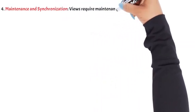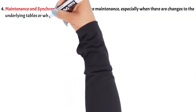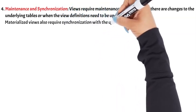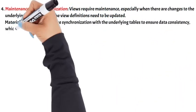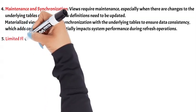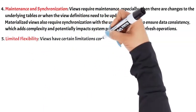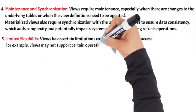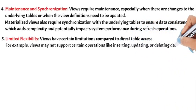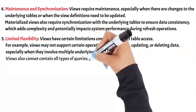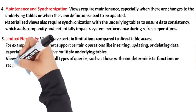4. Maintenance and Synchronization. Views require maintenance, especially when there are changes to the underlying tables or when the view definitions need to be updated. Materialized views also require synchronization with the underlying tables to ensure data consistency, which adds complexity and potentially impacts system performance during refresh operations. 5. Limited Flexibility. Views have certain limitations compared to direct table access. For example, views may not support certain operations like inserting, updating, or deleting data, especially when they involve multiple underlying tables. Views also cannot contain all types of queries, such as those with non-deterministic functions or recursive operations.